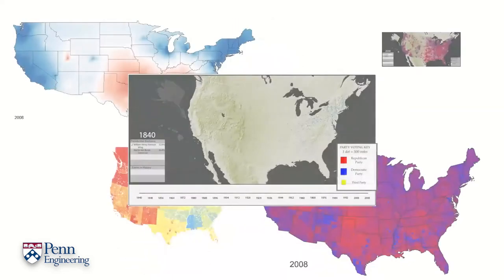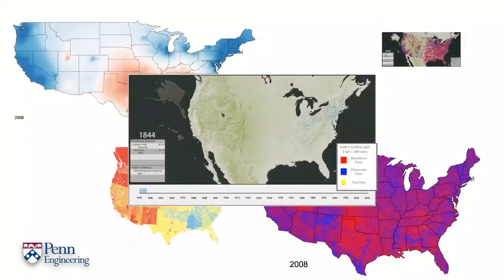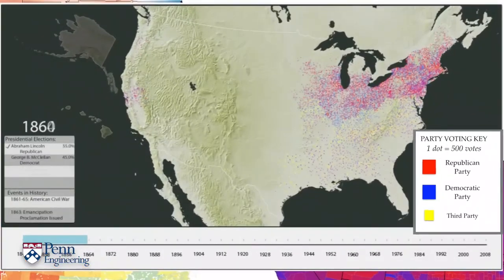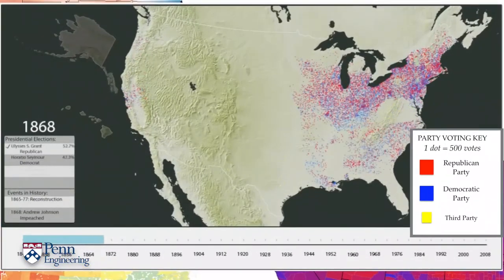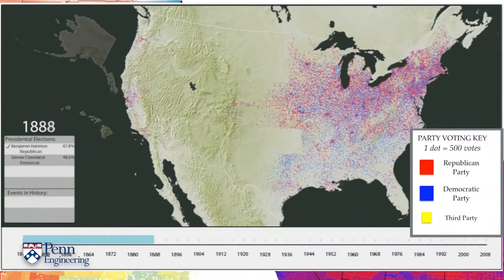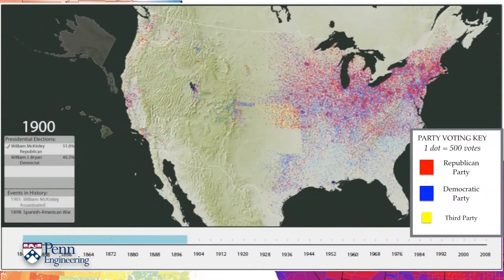Let me start with a political setting that is familiar to many people. In many countries we have two dominant political parties, and here is a montage showing how political persuasions changed across the United States over a century or so.